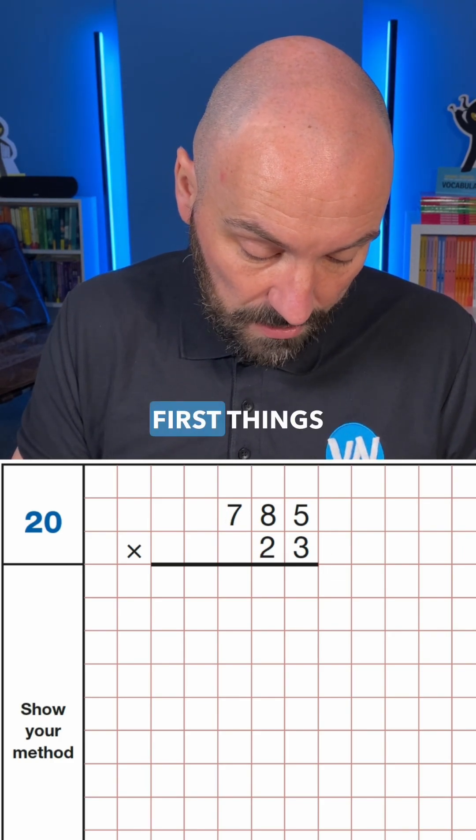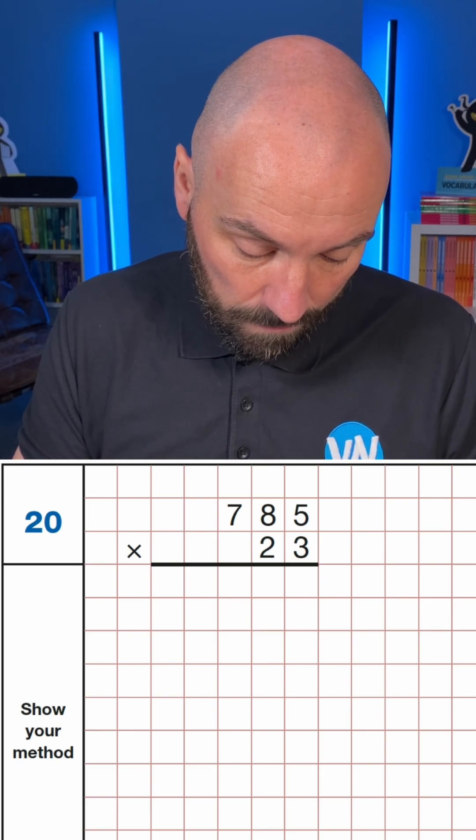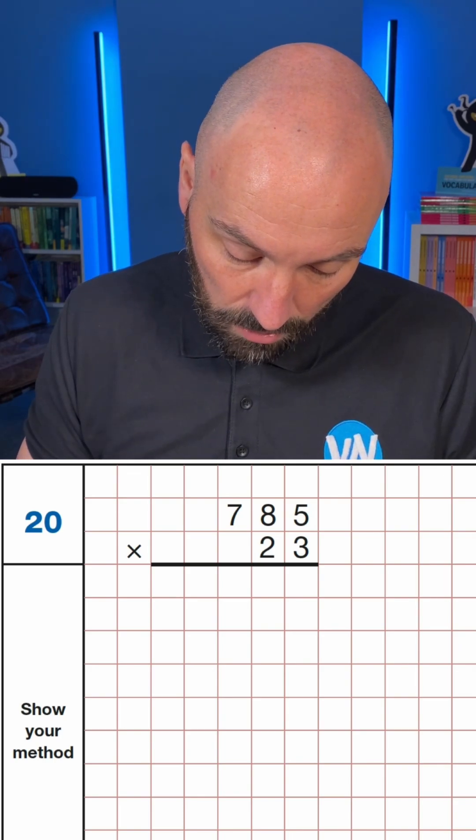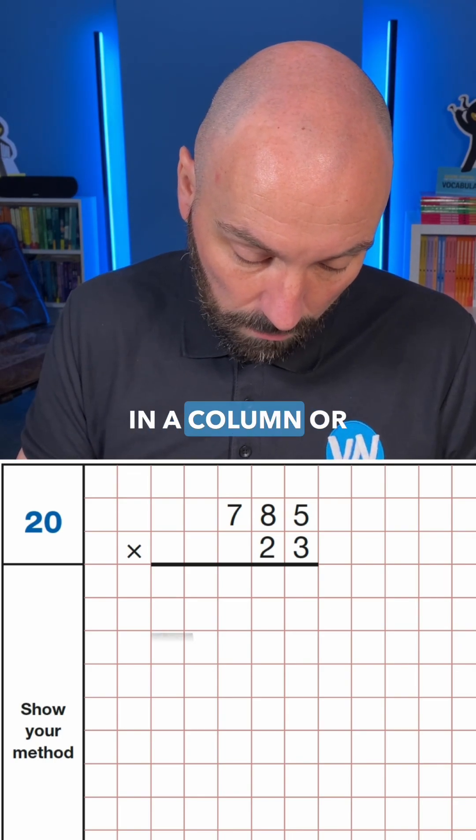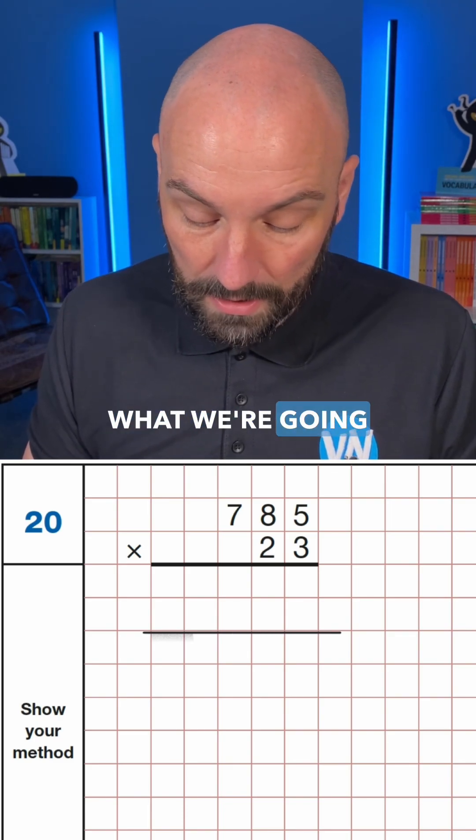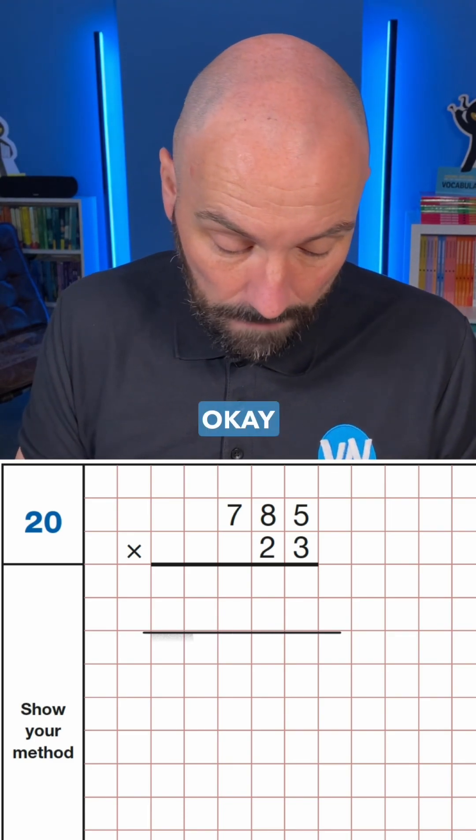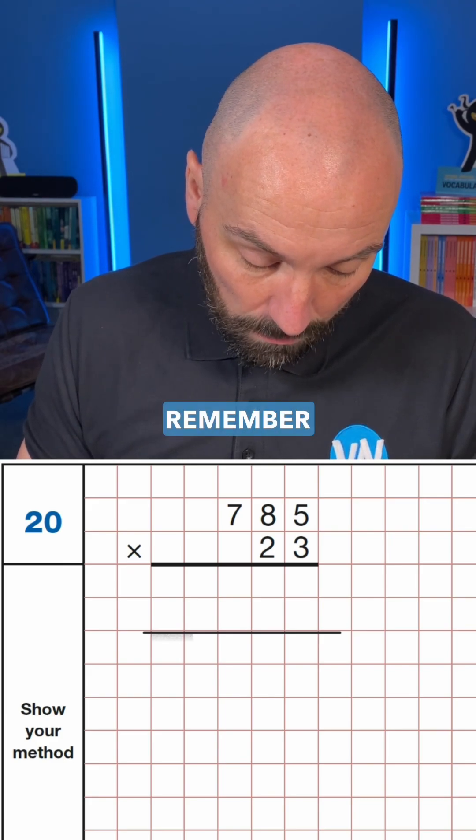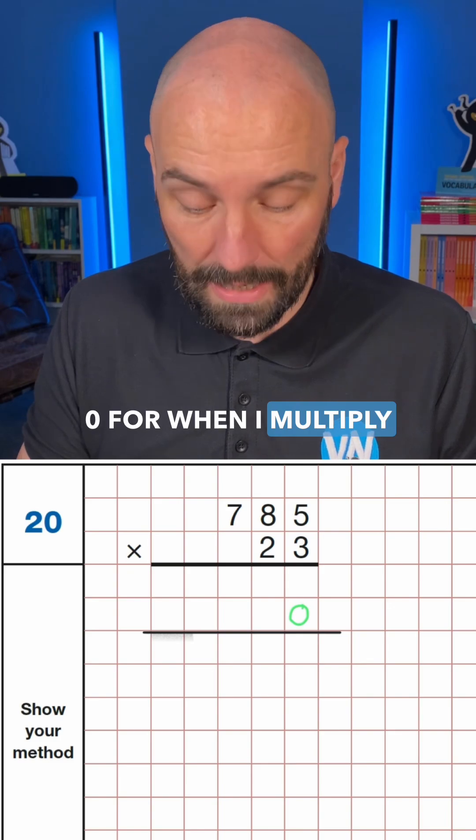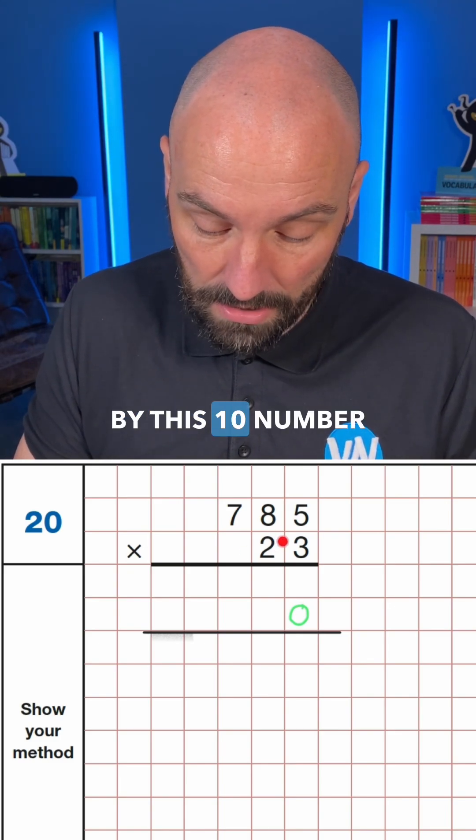Now one of the first things I want to do is, it's laid out nicely enough for us, but I want to add in a second ruler line, because in a column or a grid method, a long multiplication, what we're going to need to do is add at the end. Now the first thing that I always remember in this situation is that I'm going to need my placeholder 0 for when I multiply by this 10 number.